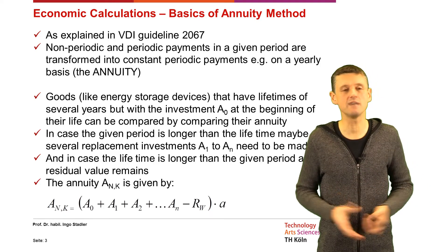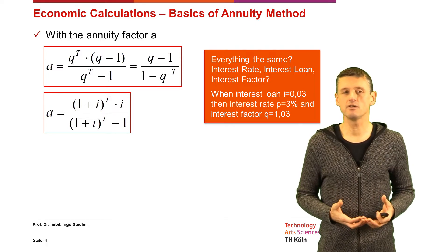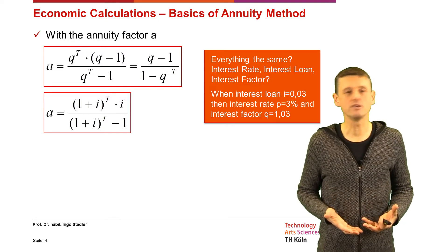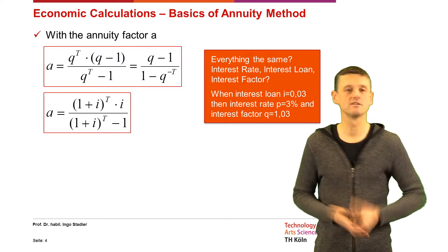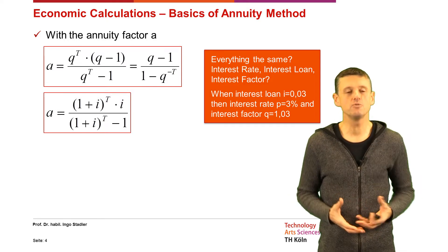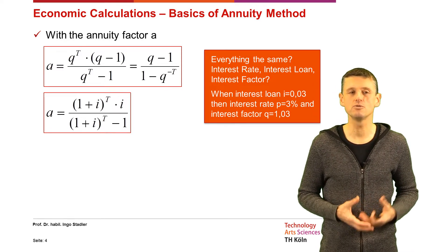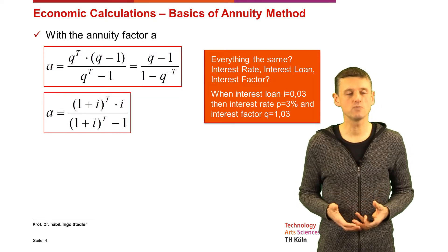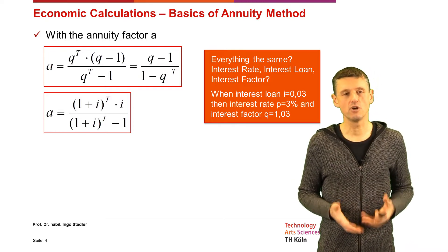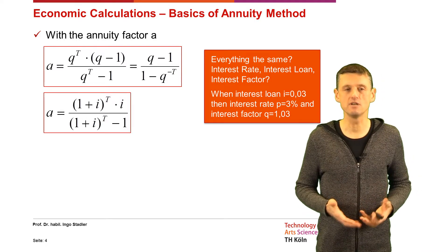The annuity factor can be expressed with different equations depending on whether we use the interest loan i — for example 0.03 — or the interest factor Q, which would be 1.03 in that example. Using Q, the annuity factor is Q^t × (Q − 1) / (Q^t − 1), which equals (Q − 1) / (Q^(−t)). Using the interest loan i, it is (1 + i)^t × i / ((1 + i)^t − 1).